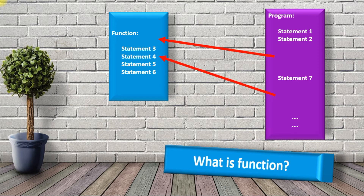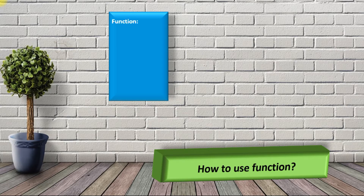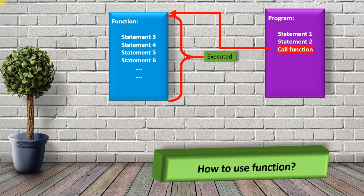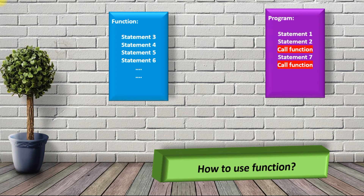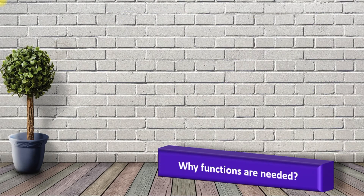After placing the statements in the function, those statements are deleted from the main program. The main program contains statement one and statement two, and you are calling the function to execute statements three, four, five, six. This is called function calling. When you call a function, the function is executed and then control returns to the main program, where the next statement is executed.